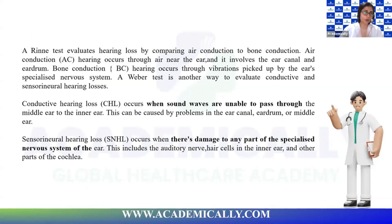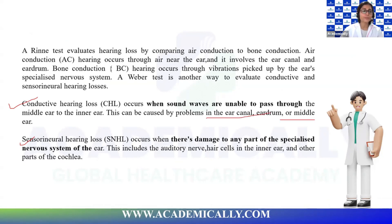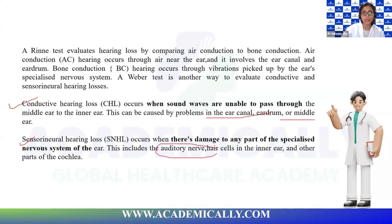Hearing loss can be of two types: conductive and sensorineural. Conductive hearing loss occurs when there is any problem in the pathway of sound conduction, which could be in the ear canal, eardrum, or up to the middle ear. Sensorineural hearing loss involves the nerves or the pathway taking sensations from the ear to the brain, or the perception in the brain — including the auditory nerve, hair cells in the ear, or other parts.